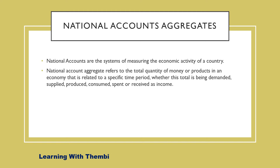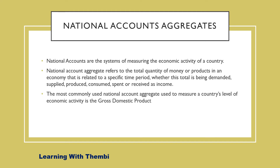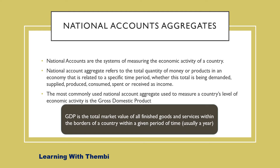The national accounts aggregate is talking about the overall production, the value of production, the value of expenditure, and the value of income within the country. The most commonly used national account aggregate, which is used to measure the country's level of economic activity, is the gross domestic product, commonly known as the GDP. By GDP, we are referring to the total market value of all finished goods and services within the borders of the country in a given period of time, which is normally a year.